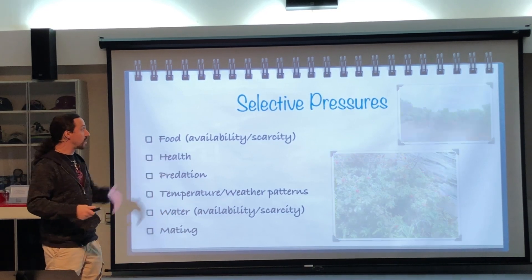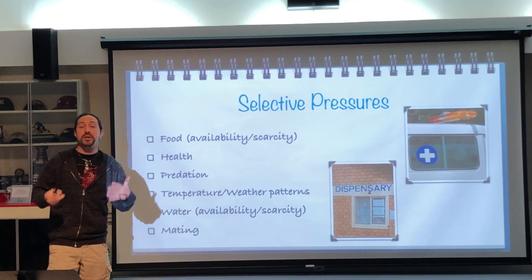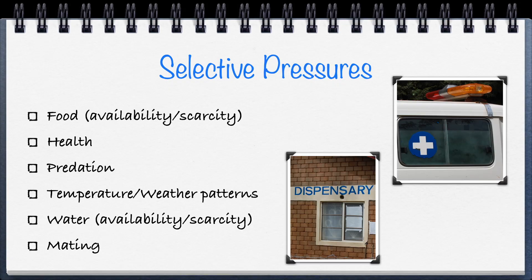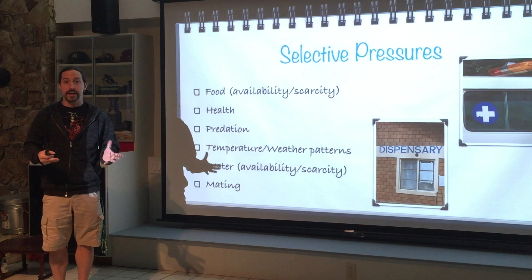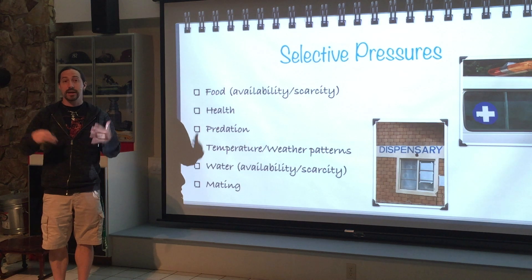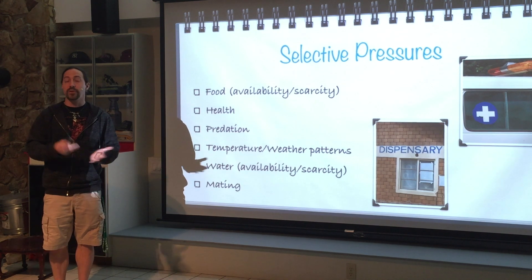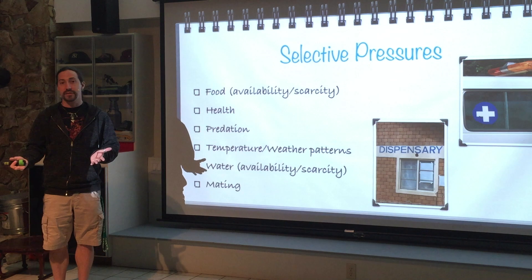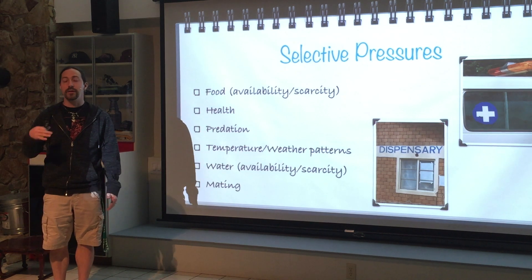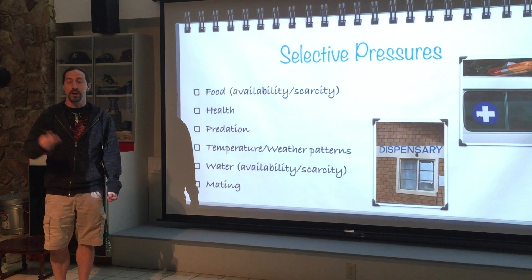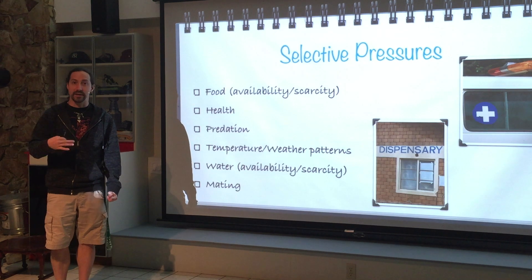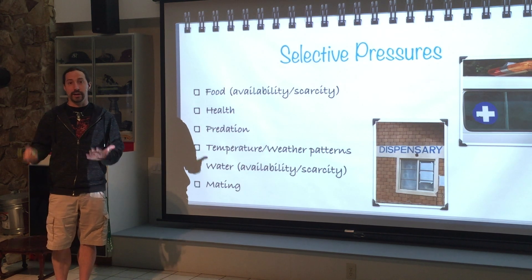Another selective pressure is health. If there's a pestilence going around — something viral, bacterial, or otherwise — organisms that have the best immunity against that pathogen are going to succeed. They will pass on that trait to their offspring, which is very valuable for the population. Those susceptible to the pathogen will die out and not pass on their alleles.